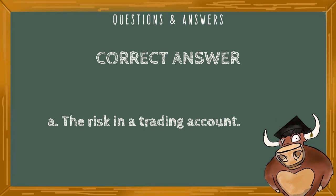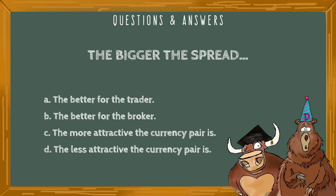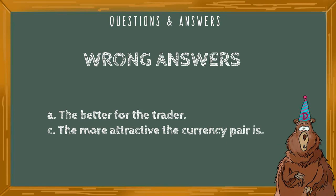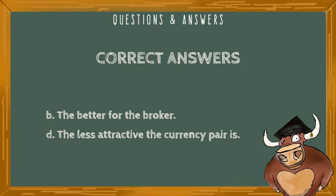The bigger the spread: A) the better for the trader, B) the better for the broker, C) the more attractive the currency pair is, D) the less attractive the currency pair is. The correct answers are B, the better for the broker, and D, the less attractive the currency pair is. By having a larger spread, a currency pair is more difficult to make profits with, as the broker makes its money by charging the spread, making trader profits more difficult to reach.